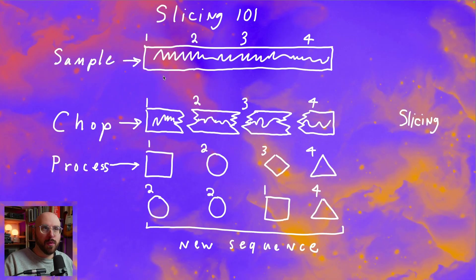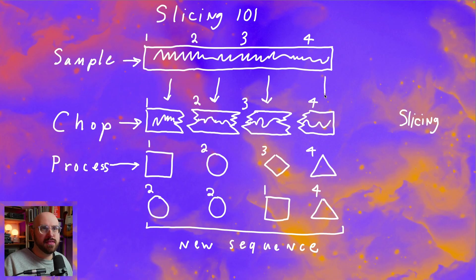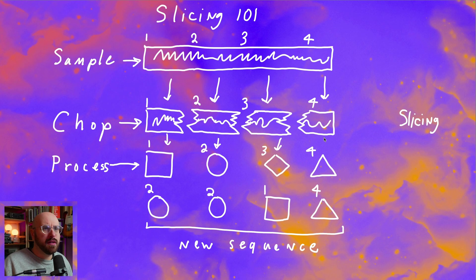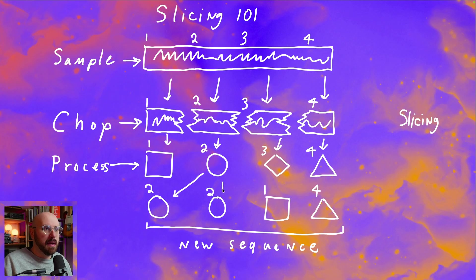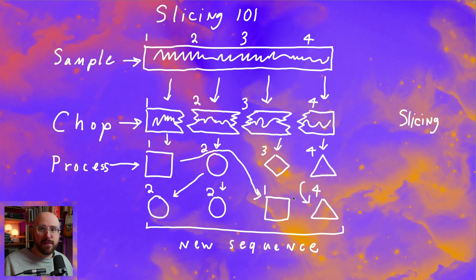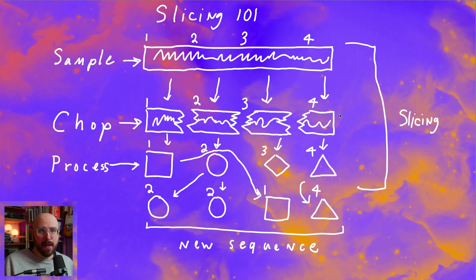When working with samples, a common workflow is to take a sample and chop it up, or to divide it into smaller units. The reason why we divide it into smaller units is so that we can then process those units into some sort of different shape, whether that's through effects, warping, or some other means. And then usually you are creating a new sequence with your chops by rearranging the elements in some fashion, and you've taken a sample and made it your own. The cool thing about slicing in Ableton Live is that it automates those first three steps for you.